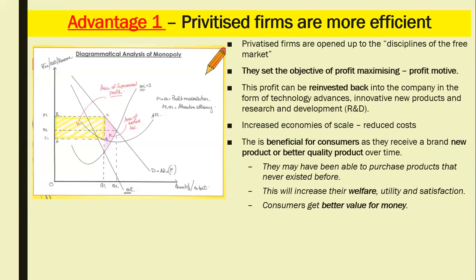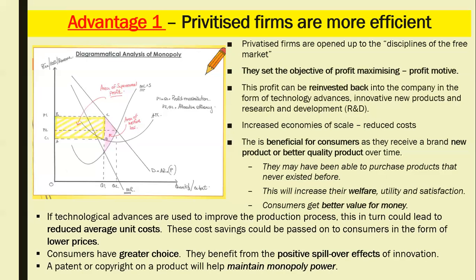Privatised firms may introduce entirely new products that never even existed before — for example, being able to track your parcel through Royal Mail using an app on your phone is something that didn't exist 20 years ago. Consumers will increase their welfare, utility, and satisfaction. Consumers gain possibly better value for money. If technological advances are used to improve the production process, this in turn reduces average costs, and these cost savings could be passed on to consumers in the form of lower prices.